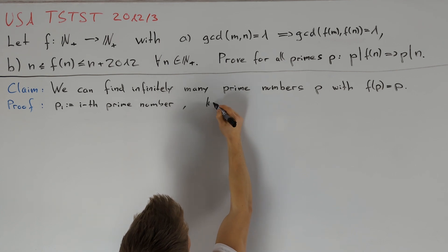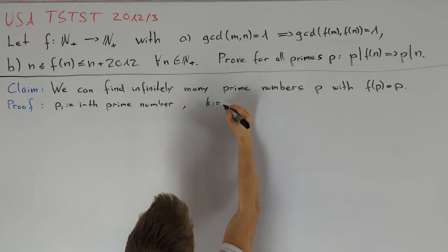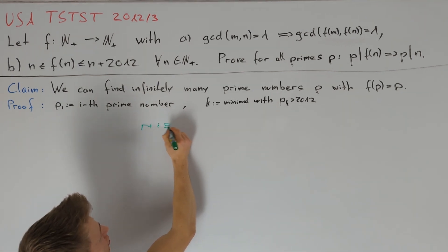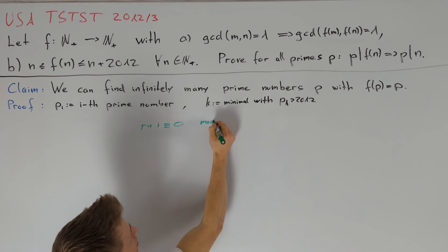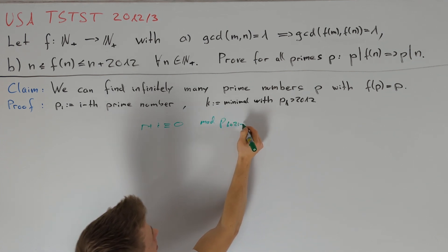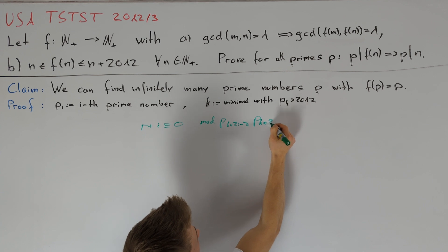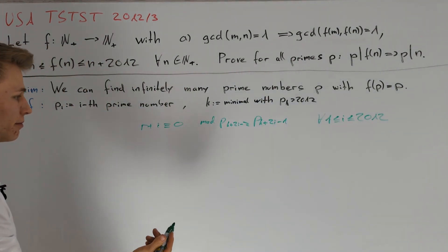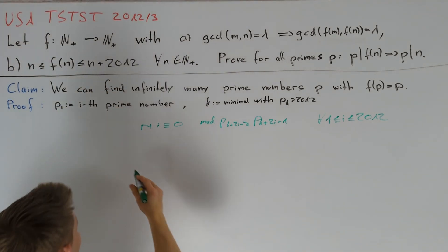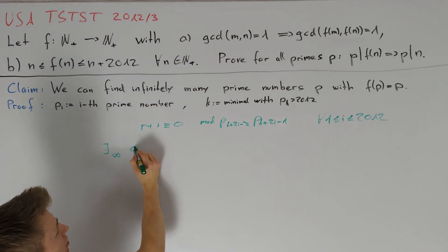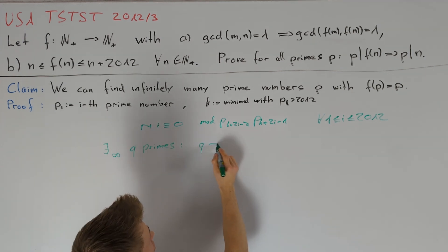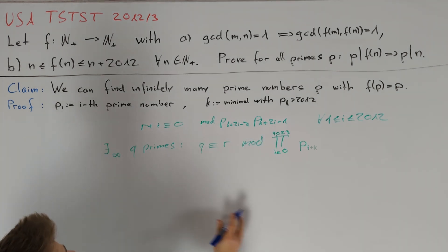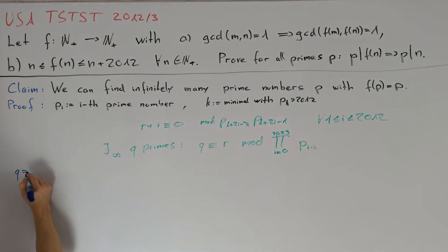We again only consider prime numbers greater than 2012, so let k be minimal such that pk > 2012. This time, we define r such that r + i ≡ 0 modulo pk+2i−2 · pk+2i−1. This can be achieved by the Chinese Remainder Theorem. Again by Dirichlet's theorem, we can find infinitely many prime numbers q such that q ≡ r modulo the product of these primes. Let's take such a prime and write it as pl.